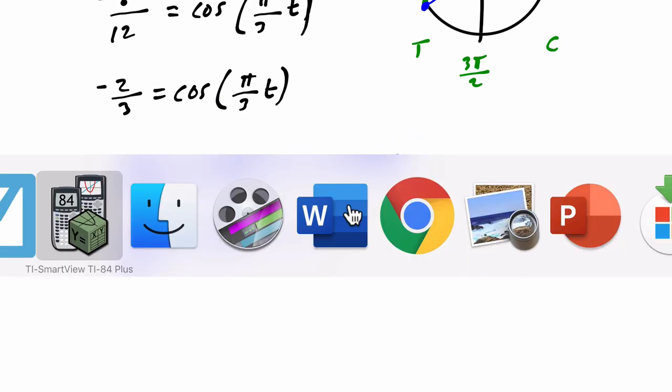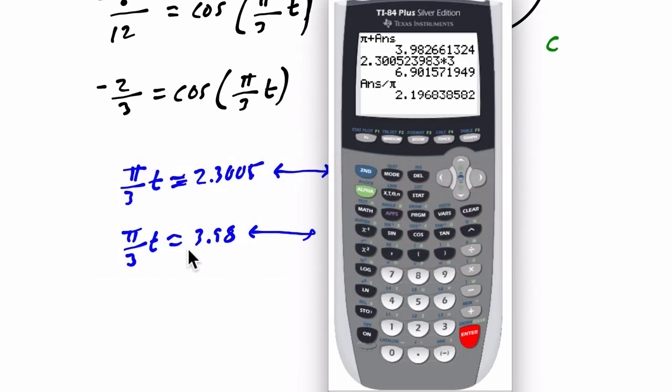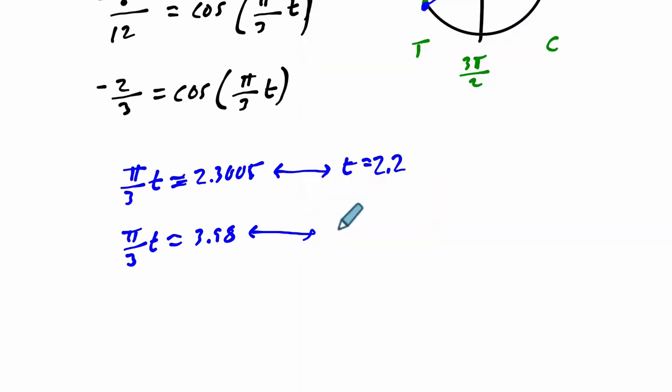And then in the other part, we have the same idea. This is only true if 3 times 3.98 divided by pi is t. We go up, here's our number, we're going to grab it, the full thing. Times 3, divided by pi. And we get 3.8. So if t is 3.8, that's the algebraic process.